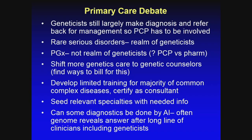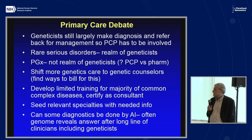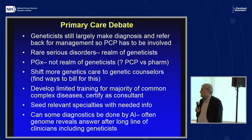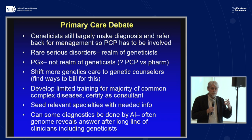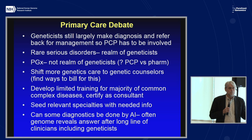We had a really fun and effective debate that brought out a lot of interesting issues. Geneticists still largely make diagnoses and refer back for management — so-called catch and release — and the primary care providers have to be involved. There are rare serious disorders that have to be the realm of trained genetics because they're complicated. There was a lot of discussion about pharmacogenomics not really being the realm of geneticists, maybe not of primary care physicians either, and maybe it should be the realm of pharmacists.